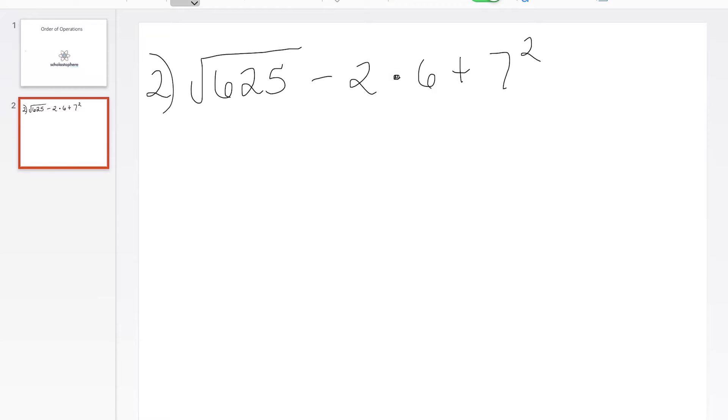So the square root of 625 is 25. 25 times 25 gives you 625. And then the 7 squared, or 7 times 7, is 49. So we're going to bring down the 25. The root sign goes away. We're going to bring down minus 2 times 6 plus 49.